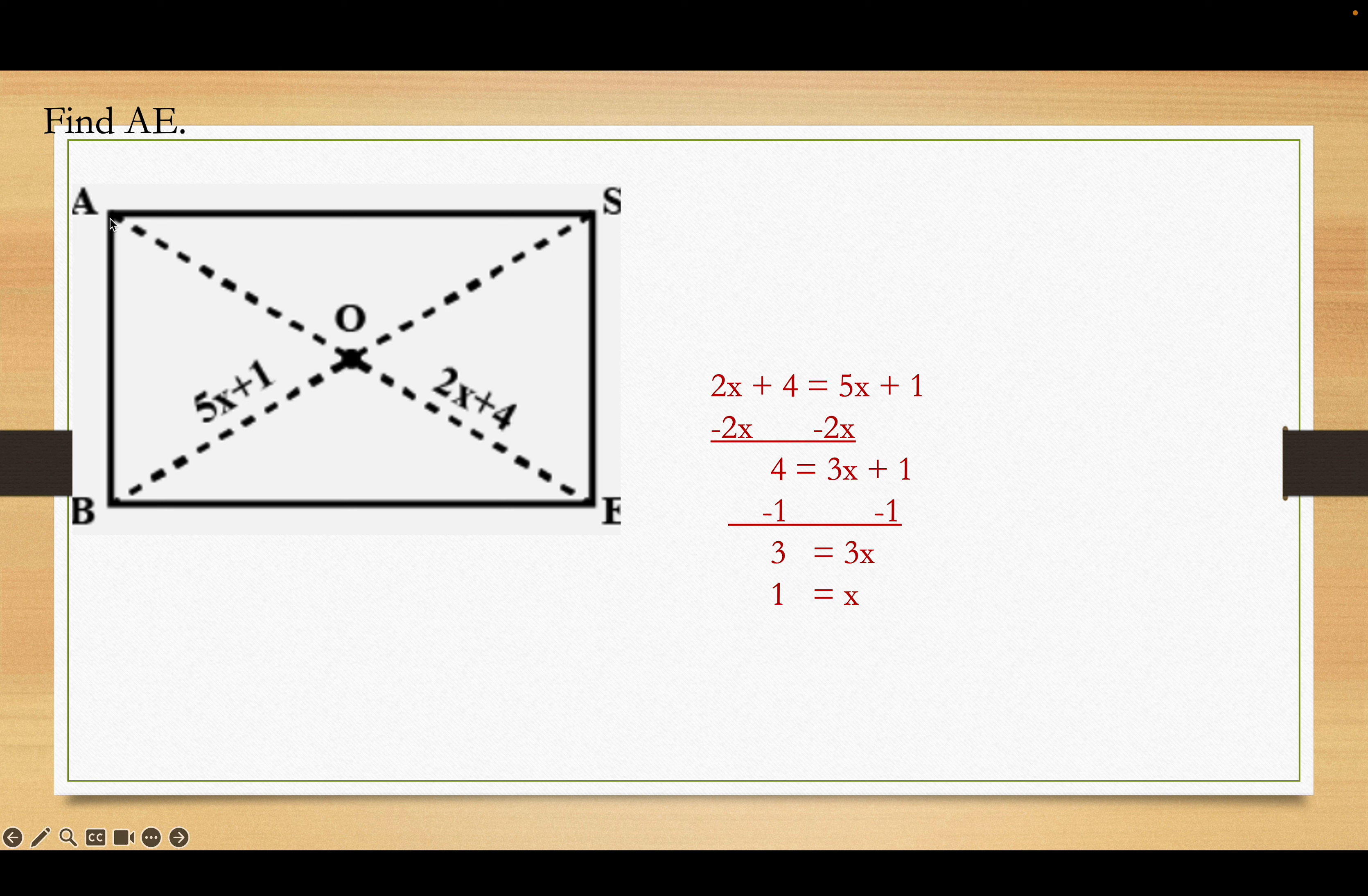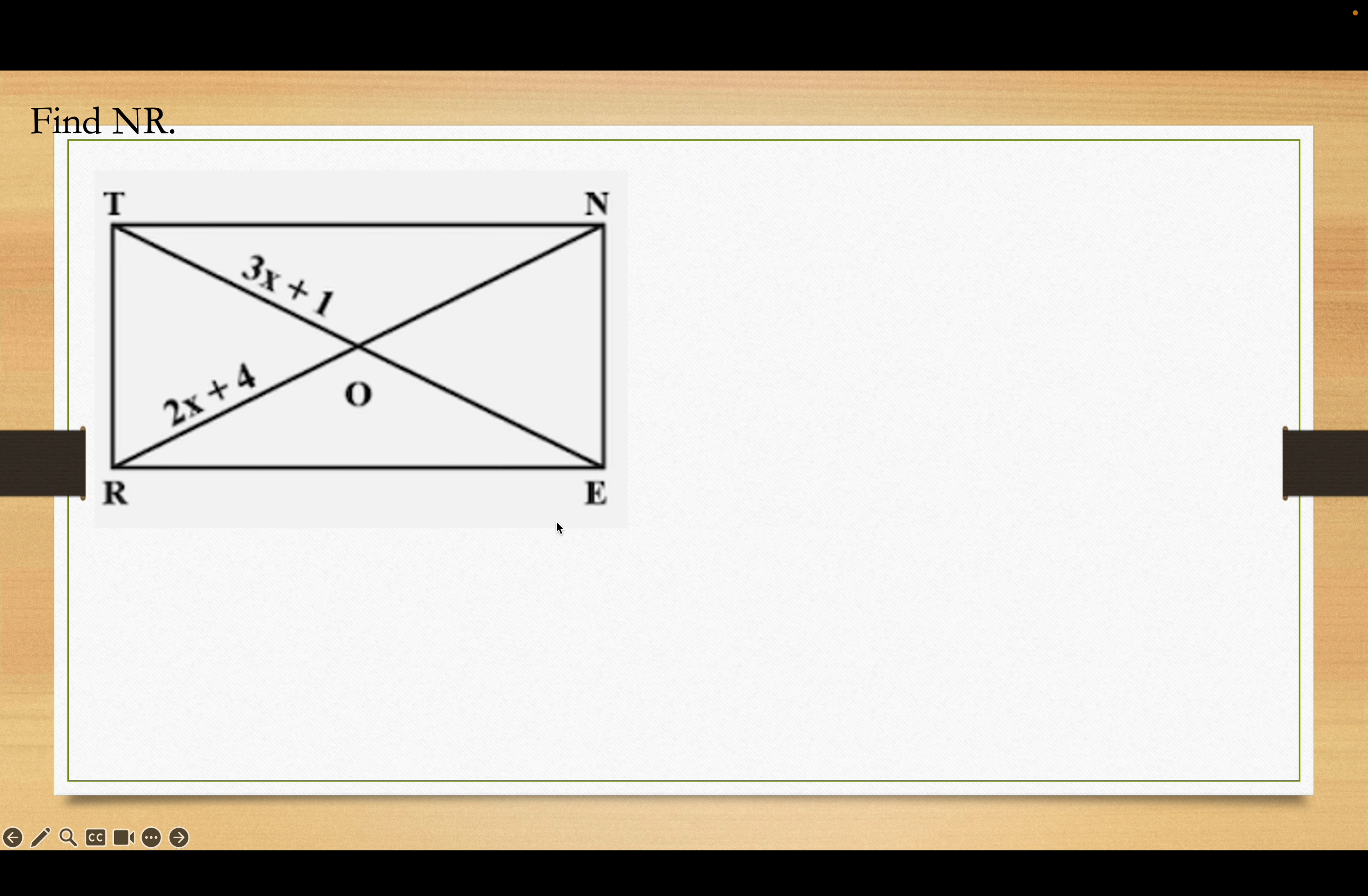It wants the length of AE, which is the whole thing. So, if I do 2 times 1 plus 4, I get 6, and then the whole length will be 12. Got to double that 6. Okay. Similar question. So, 3x plus 1 is 2x plus 4, and like before, that also works out just so coincidentally to have a value of 3. Okay. It wants nR. nR will be doubled to 2 times x plus 4. So, 2 times 3 is 6 plus 4 is 10, and doubling it gets you 20.